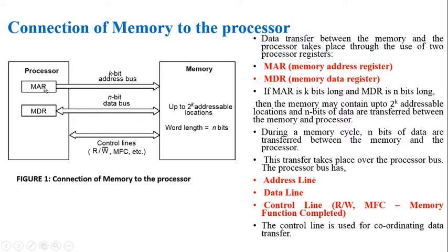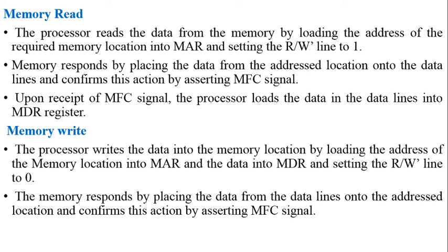Upon receipt of the MFC signal, the processor loads the data from the data lines into the MDR register. In summary: the processor places the address in the MAR onto the address bus; the memory fetches the data and places it on the data bus; the MFC signal acknowledges that the data is available; and the processor reads the data from the data bus into MDR.